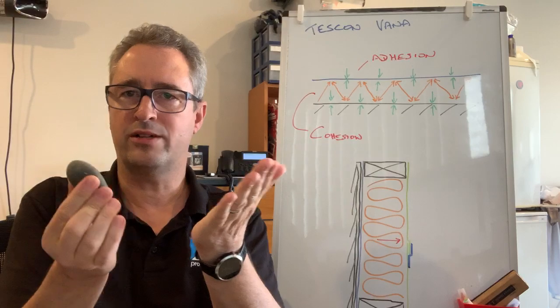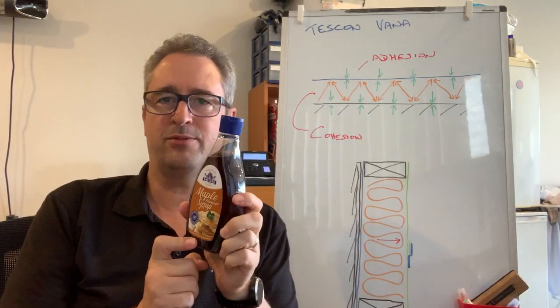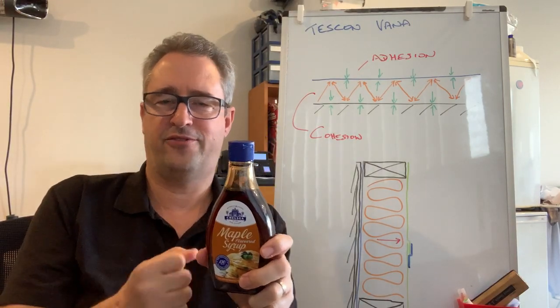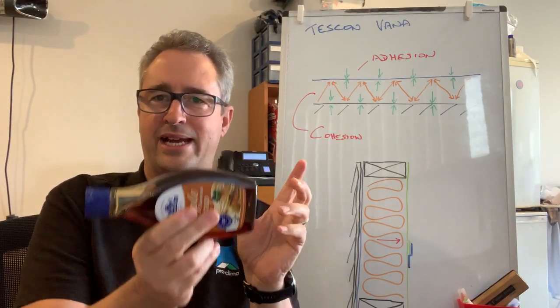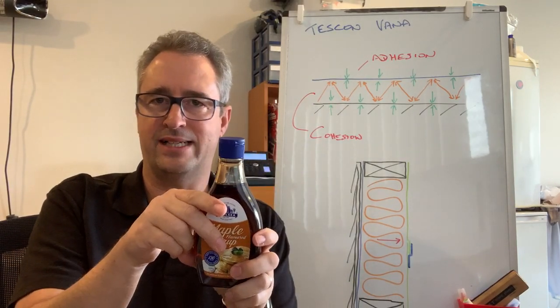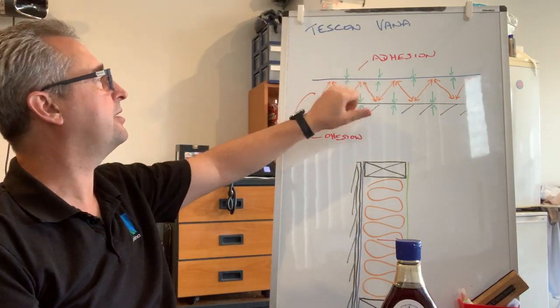On the other hand, we have this runny maple syrup. This is very sticky. If I pour this over the desk, you'd find it very hard to get it off. But it has very low cohesive forces, so it moves around very easily and pulls apart. So if we have a look at those two forces in this little diagram.